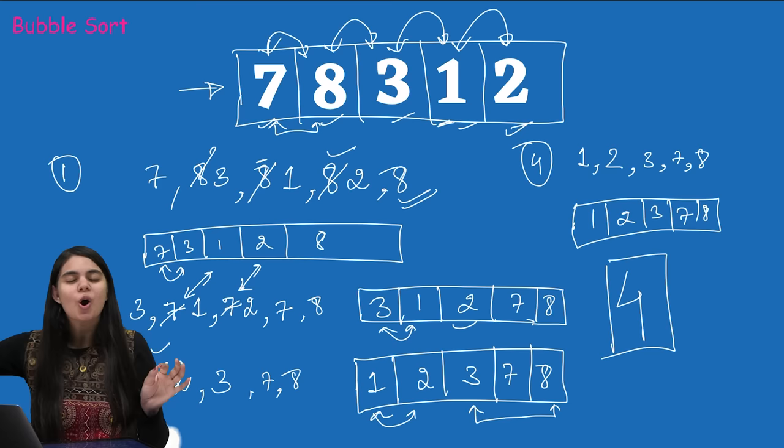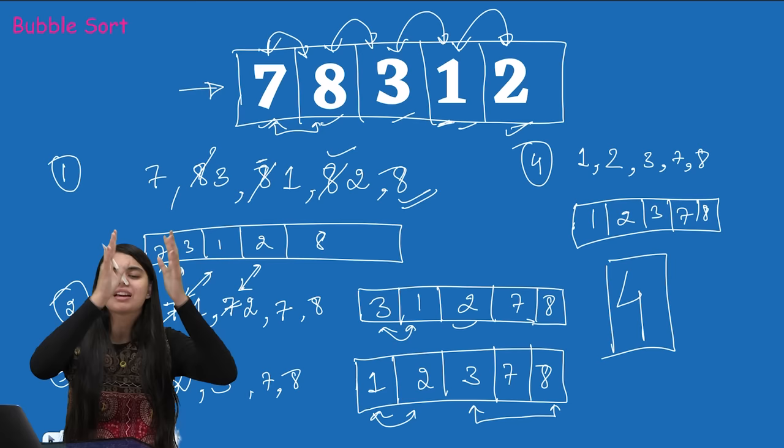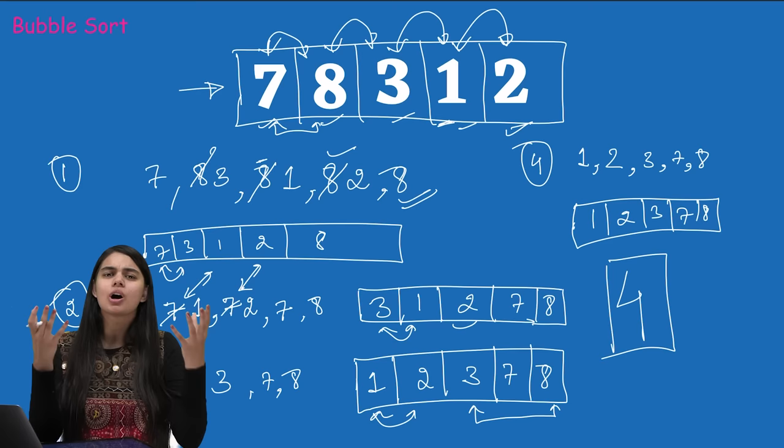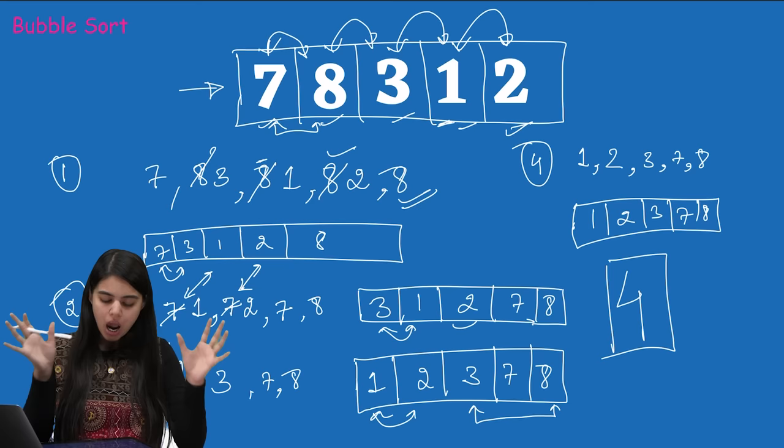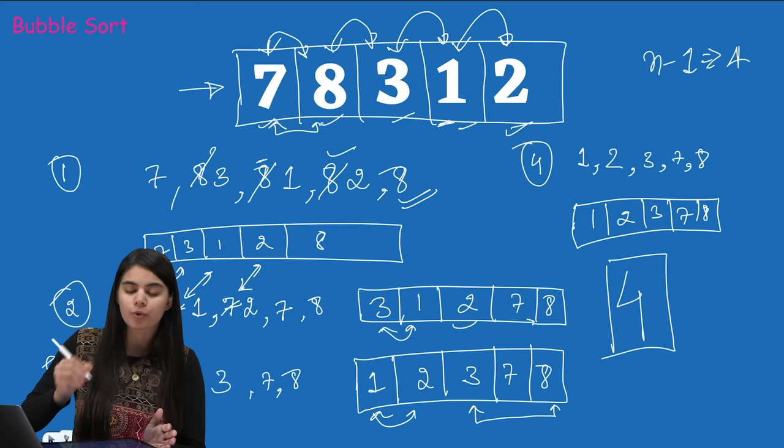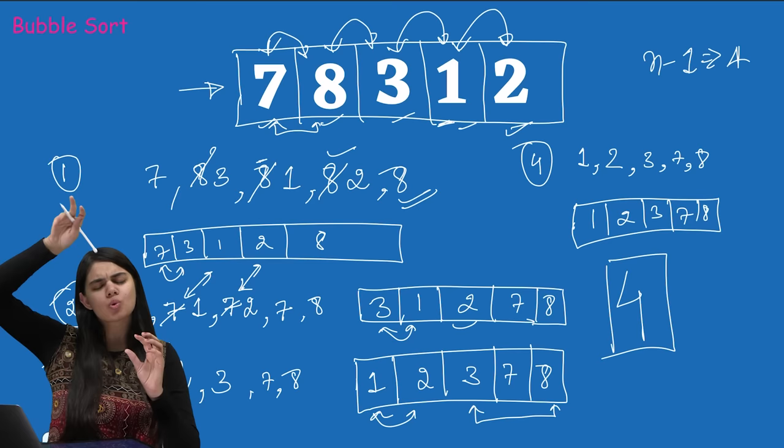If we reverse the comparison condition — pushing the small element back instead of the large — then our array would be sorted in descending order. That is just such a difference between ascending and descending. We have done n-1 comparisons which equals 4, and every time we ignored the already-sorted large elements at the end.